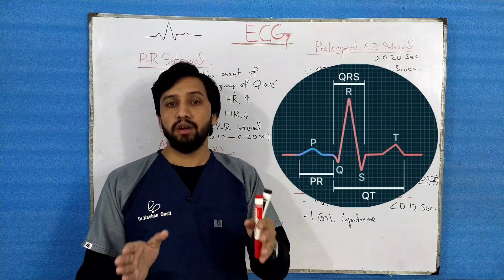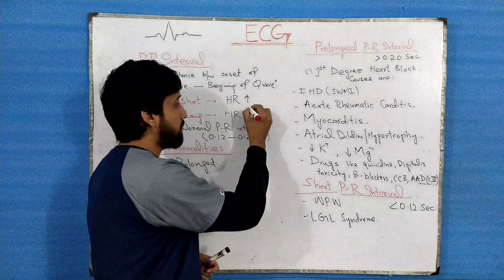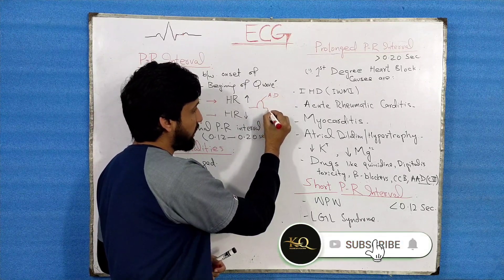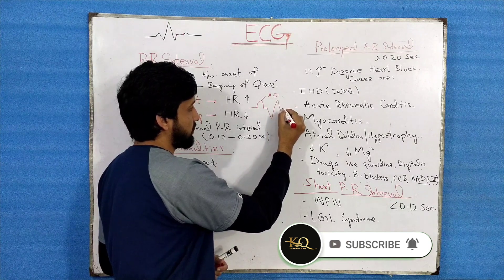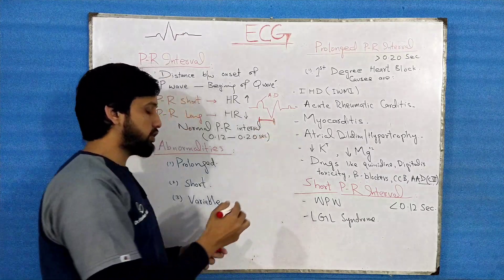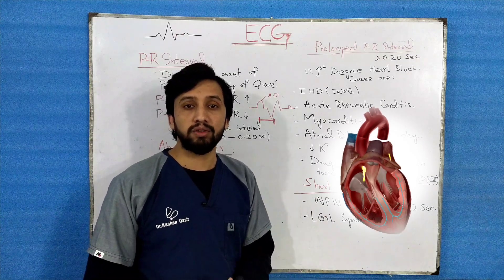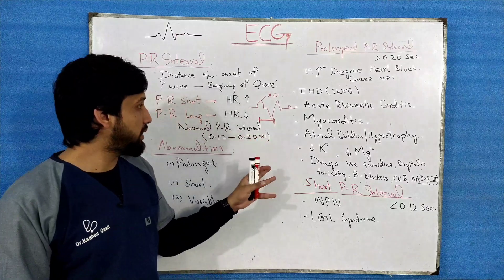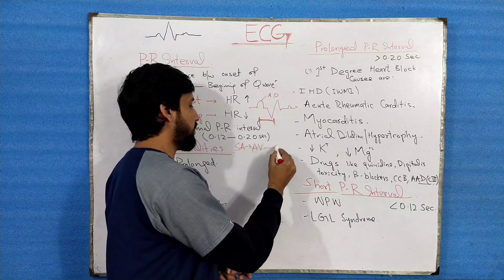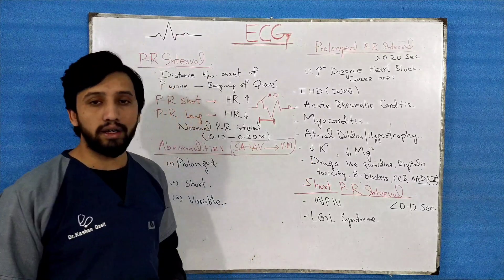The PR interval is the part of the ECG complex which shows the distance between the P wave and the beginning of the QRS complex. It represents the distance between the beginning of the P wave, which is atrial depolarization, and the beginning of the Q wave. It is the time taken for the impulse to travel from the SA node via the AV nodal fibers to the ventricular musculature.